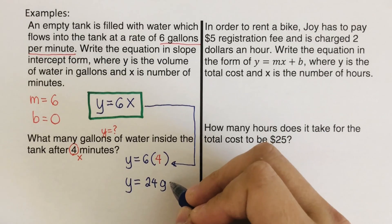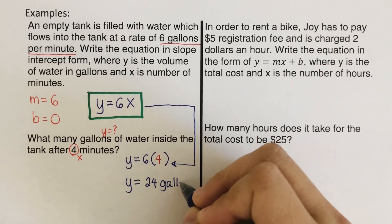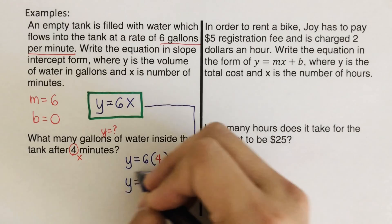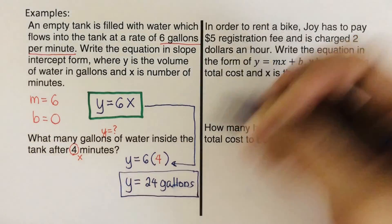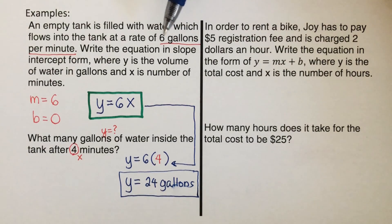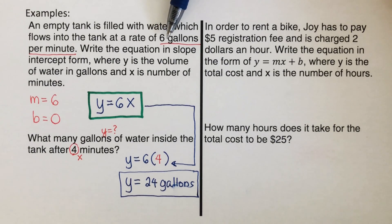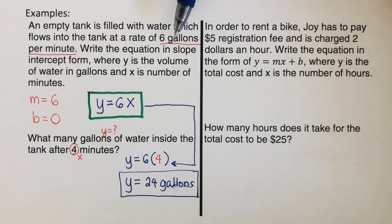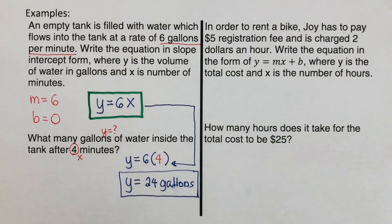That makes sense because the problem says 6 gallons per minute. So in the first minute you get 6, in the second minute 12, in the third minute 18, and in the fourth minute 24 gallons. That makes sense.